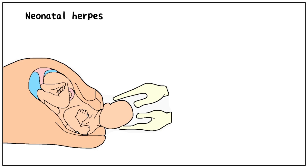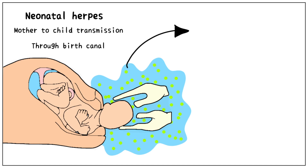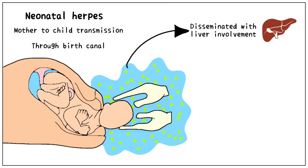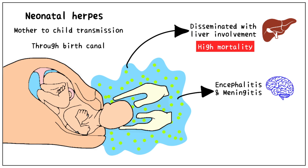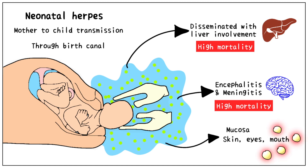Another form of infection is neonatal herpes. This is transmitted from mother to child through the birth canal. The newborn has no immunity, so infection is usually very severe. It may present as disseminated infection with liver involvement, which has a very high mortality rate. It can also cause encephalitis and meningitis, which also carry a high mortality. In some cases it only affects the mucosa — that is the skin, eyes, and mouth — characterized by multiple vesicles. This form is caused by HSV2, transmitted from the mother's genital mucosa to the child, making prenatal diagnosis very important.